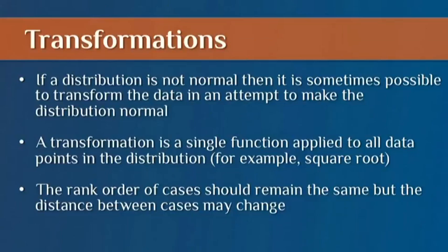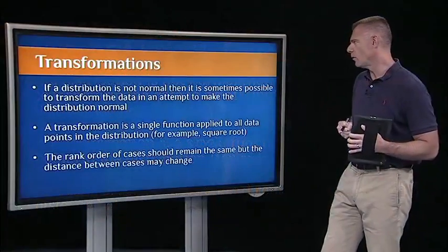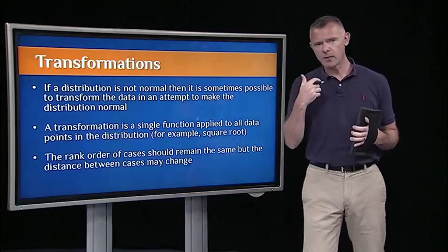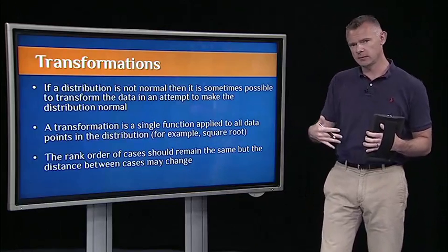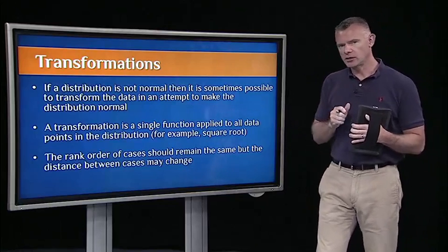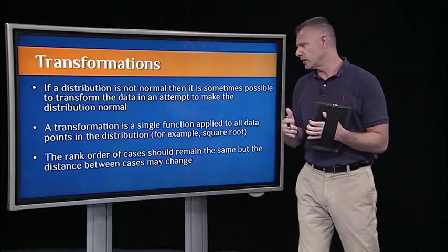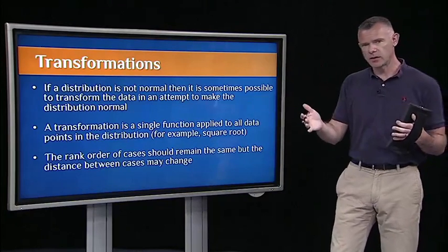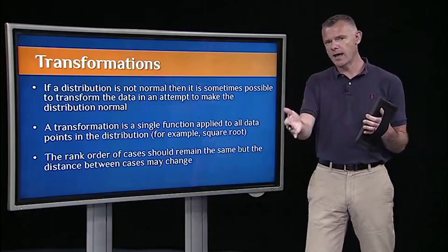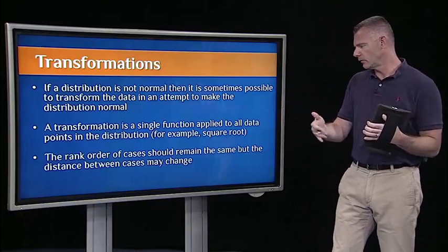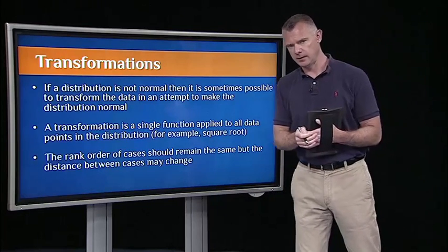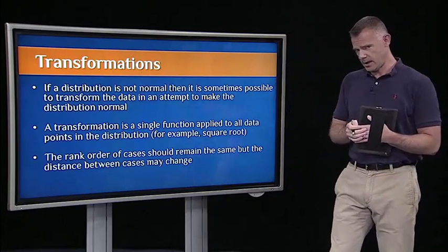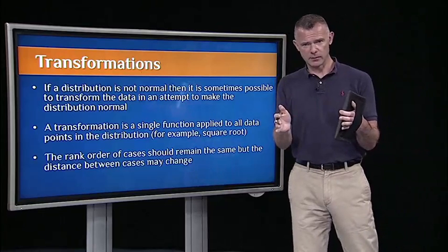The way you do that is through a data transformation. If a distribution isn't normal, then it's sometimes possible to transform the data set to make it normal. A transformation is just a simple mathematical function applied to all values in the data set. For example, we can take the square root of every value in a distribution.